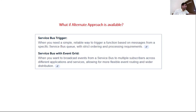So basically, you can go with the Service Bus trigger — which is a simple, straightforward way — or you can go with Event Grid combined with Service Bus, which provides more flexibility and allows you to notify different applications and services.